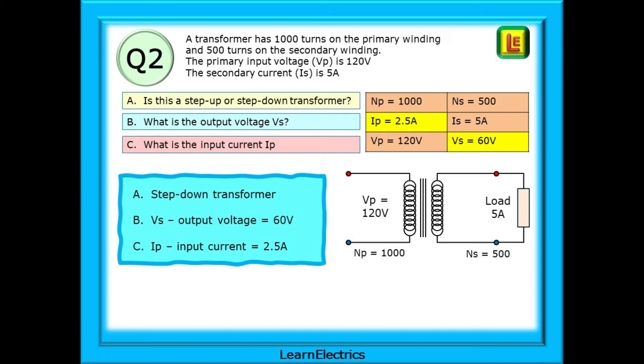Because the input voltage is bigger than the output voltage, the input current will be smaller than the output current. Remember that voltage and current move in opposite directions. As one goes up, the other goes down, because the wattage on both sides must stay the same.